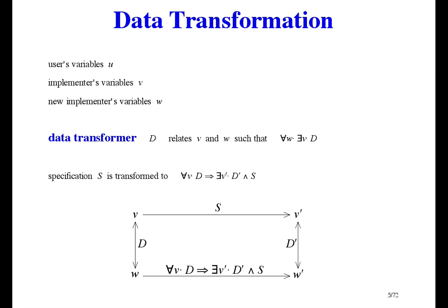But after the data transformation, the new state will actually be w, which is related to v by the transformer d. That's the left side of the picture. The user is not supposed to notice any difference. And that's because whatever state w we start with, there is a related state v for the user to imagine that we're in. This specification is supposed to take us across the bottom line of the picture, from w to w prime.